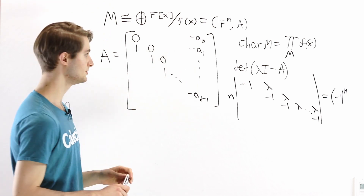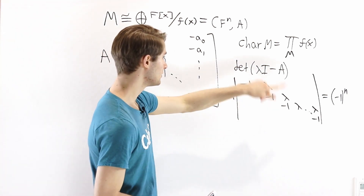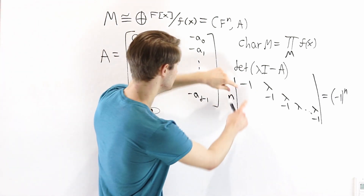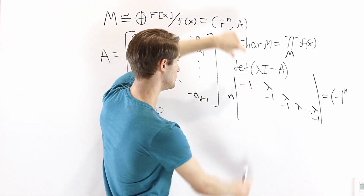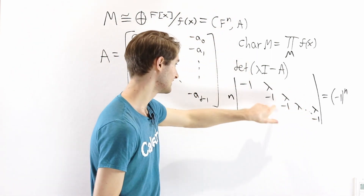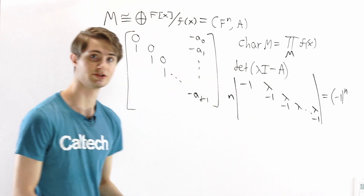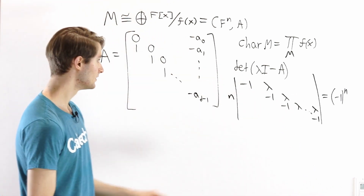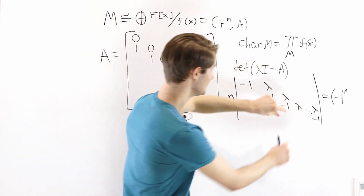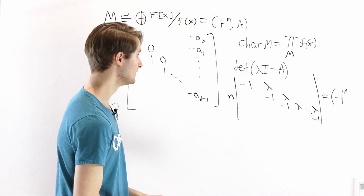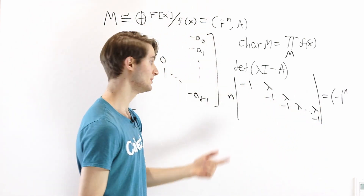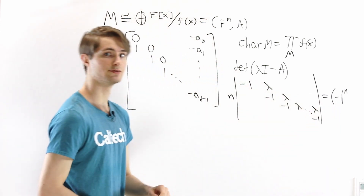Everything I haven't written is zeros. We can expand along the first column: we get negative 1 times the determinant of the inside, and everything else is zeros so that cancels out. On the inside matrix we again get negative 1 times the determinant of the rest, and so on. Since there are n such steps, we get negative 1 to the n. So this little lemma gives us det = (-1)^n.